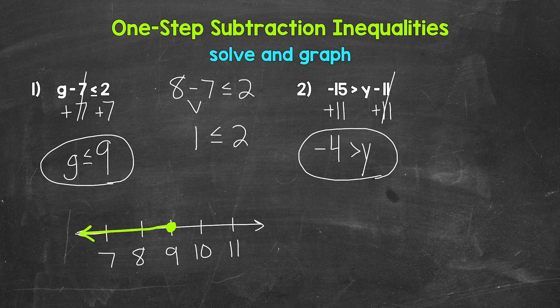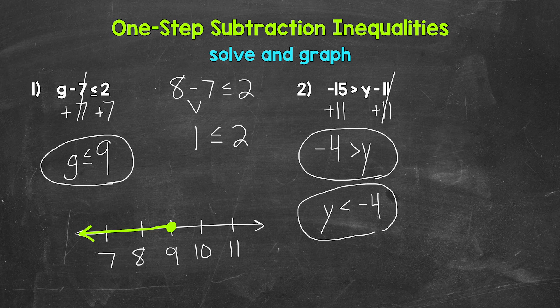So any value less than negative four is a solution of this inequality. Now, one thing we can do here is rewrite this with the variable coming first — it makes it a little easier to work with. All we need to do is flip it. So we have y, and the inequality symbol needs to stay open towards negative four. Y needs to remain less than negative four. So be careful with the symbol whenever you rewrite an inequality with the variable coming first. Y is less than negative four — either form works.